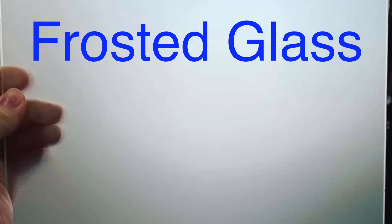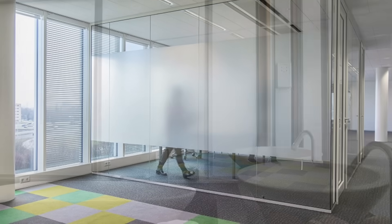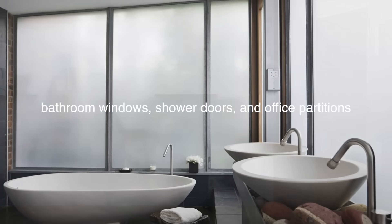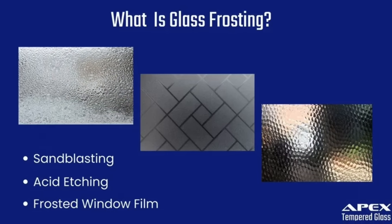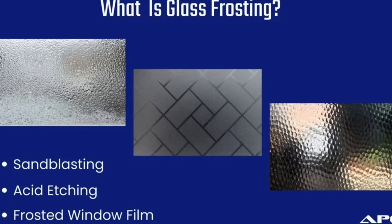Finally, there is frosted glass, which has been treated to create a translucent matte finish that diffuses light. It is often used in applications where privacy is desired, such as in bathroom windows, shower doors, and office partitions. The frosted finish can be achieved through a variety of methods, including sandblasting, acid etching, or the application of a frosted film.